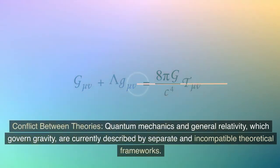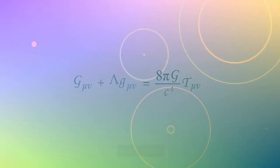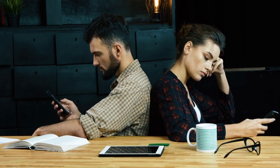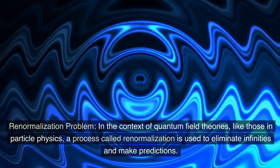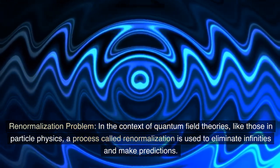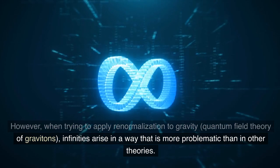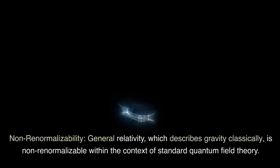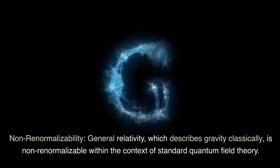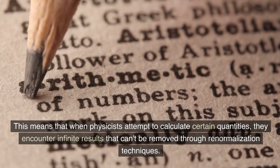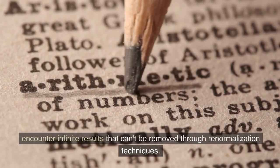Conflict between theories. Quantum mechanics and general relativity, which govern gravity, are currently described by separate and incompatible theoretical frameworks. Combining these two theories consistently has proven to be extremely challenging, leading to conceptual and mathematical difficulties. Renormalization problem. In the context of quantum field theories, like those in particle physics, a process called renormalization is used to eliminate infinities and make predictions. However, when trying to apply renormalization to gravity, quantum field theory of gravitons, infinities arise in a way that is more problematic than in other theories. Non-renormalizability. General relativity, which describes gravity classically, is non-renormalizable within the context of standard quantum field theory. This means that when physicists attempt to calculate certain quantities, they encounter infinite results that can't be removed through renormalization techniques.